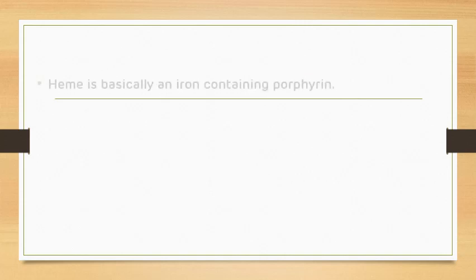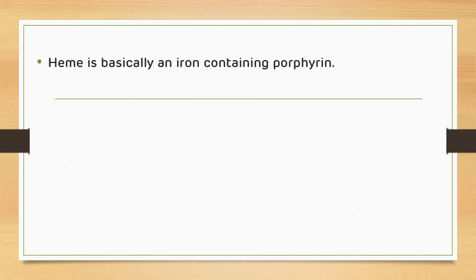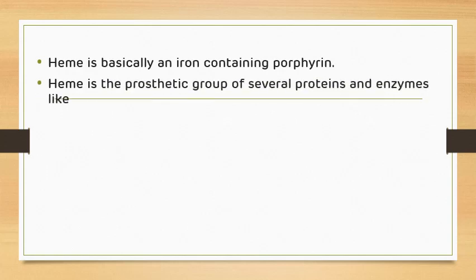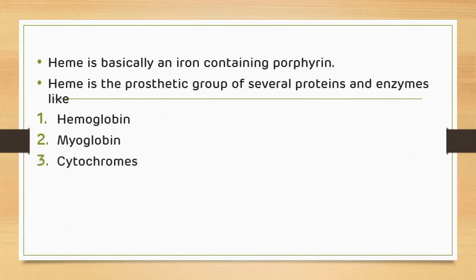Heme is basically an iron-containing porphyrin and is present as a prosthetic group in many enzymes and proteins. First, it is present in hemoglobin, which is important for the transfer of oxygen in the blood. Then it is present in myoglobin, which acts as a storage of oxygen in the tissues. It is also present in cytochromes, which play an important role in the electron transport chain.